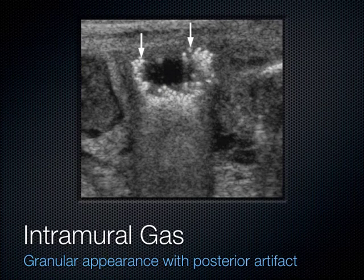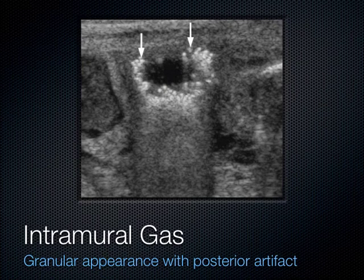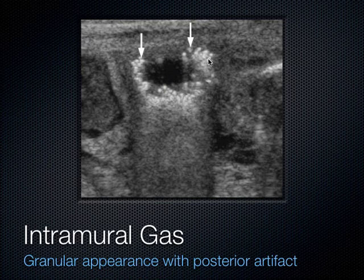This is what it looks like when you have air in the wall of the bowel — a very sick bowel in a diseased state with air from infection. This is what you see with necrotizing enterocolitis: air in the wall of the bowel, intramural air. It looks like little punctate areas, and sometimes we can see comet tails. A comet tail is a reverberation artifact that goes towards the bottom of the screen, and you see that with air and sometimes metal — but air classically causes these comet tails.